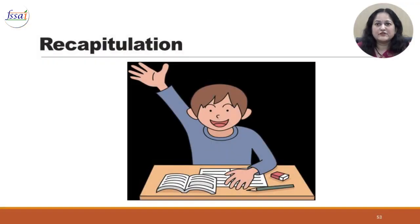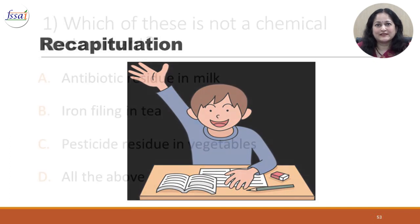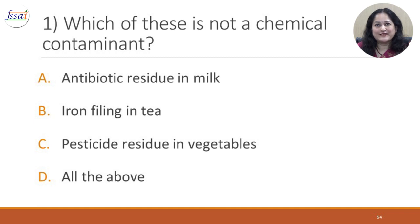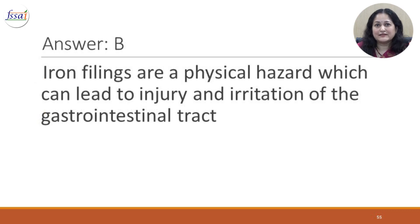Now let us recapitulate some of the important things that we have learnt. Question 1: Which of these is not a chemical contaminant? A. Antibiotic residue in milk. B. Iron filings in tea. C. Pesticide residue in vegetables. D. All the above. The answer is B. Iron filings are actually a physical hazard which can lead to injury and irritation of the gastrointestinal tract.